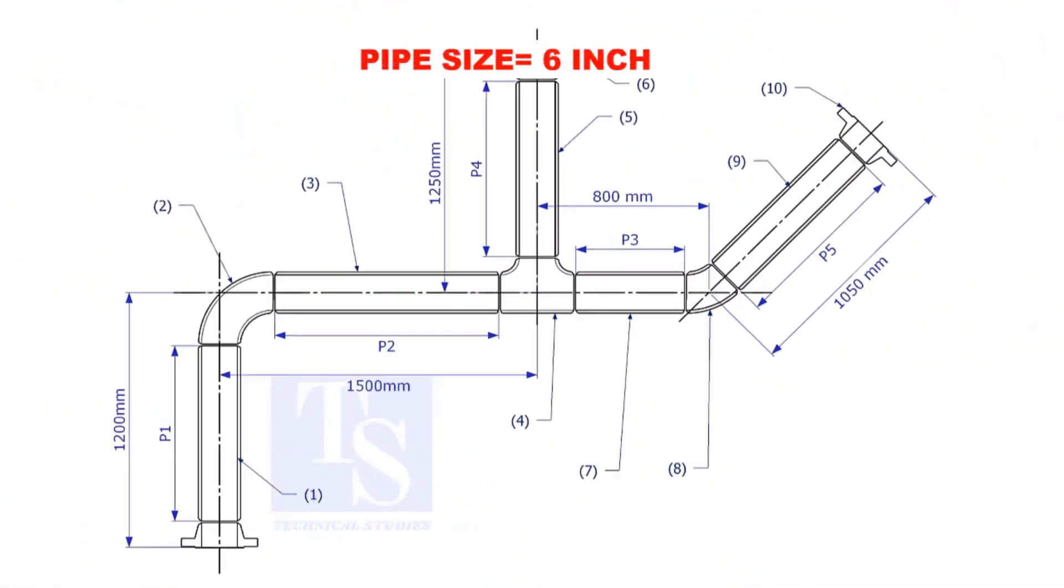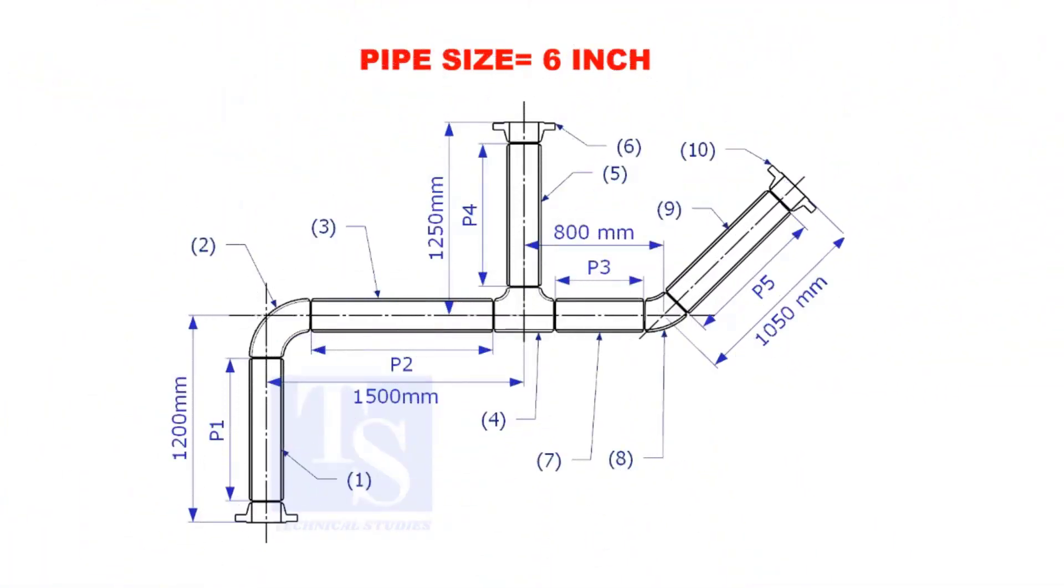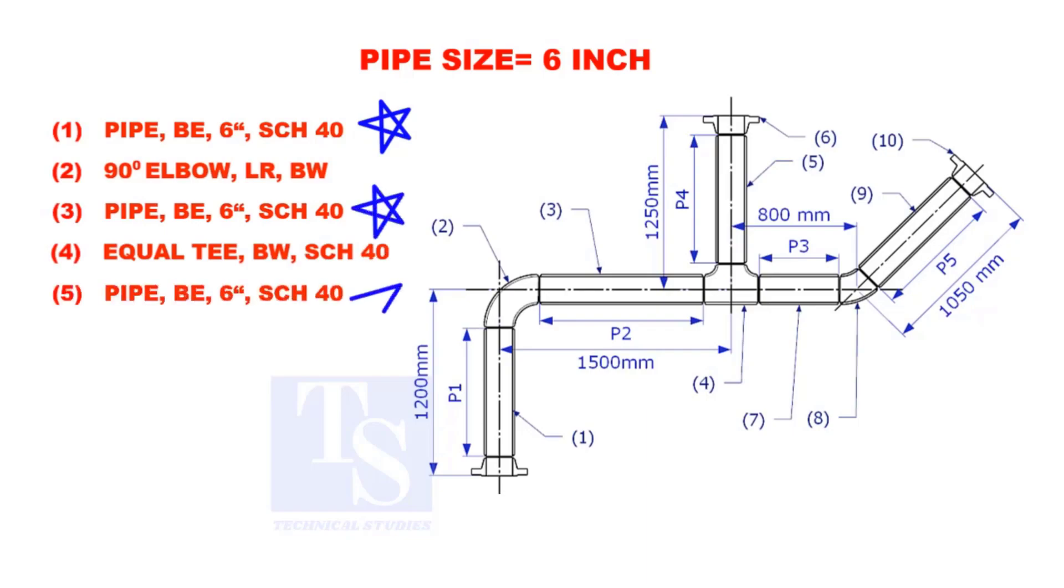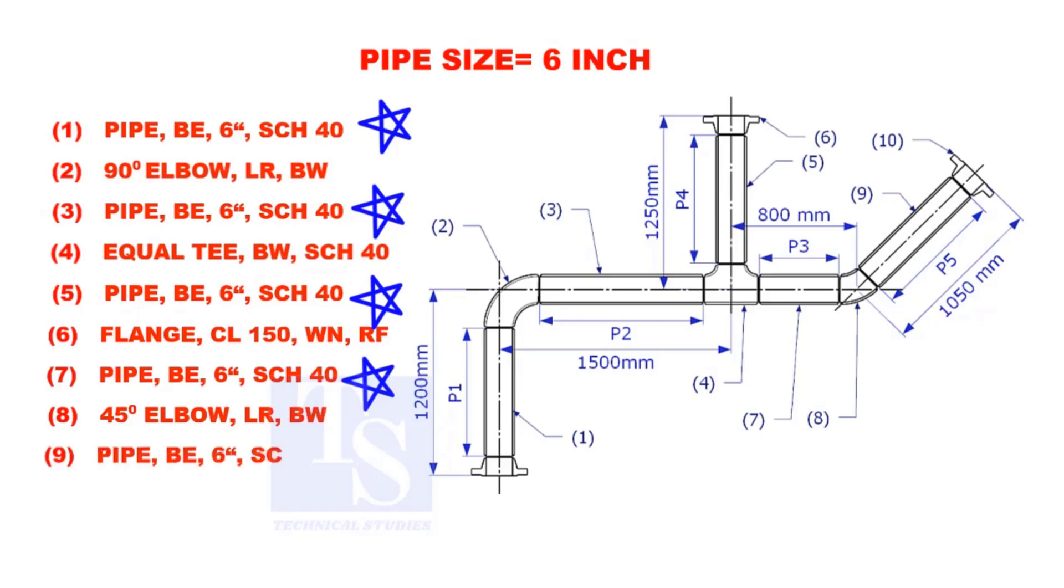Assume that the pipe size is 6 inches. Item numbers 1, 3, 5, 7, and 9 are pipes.